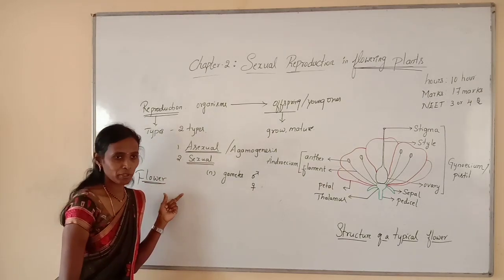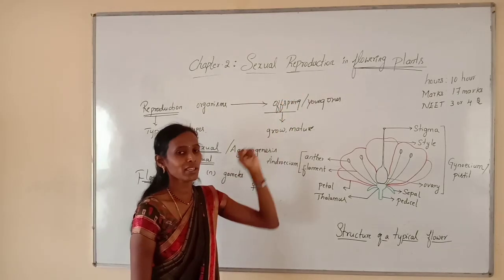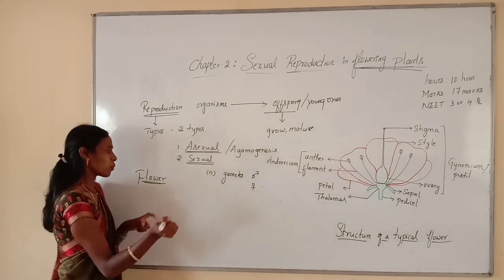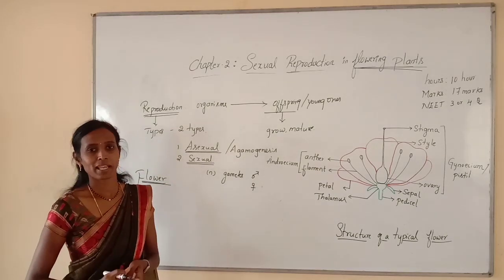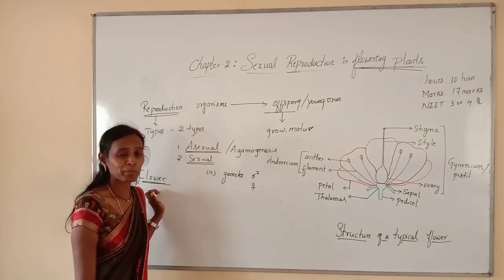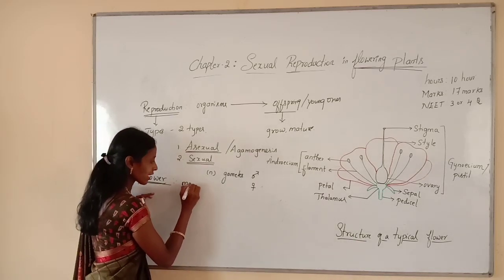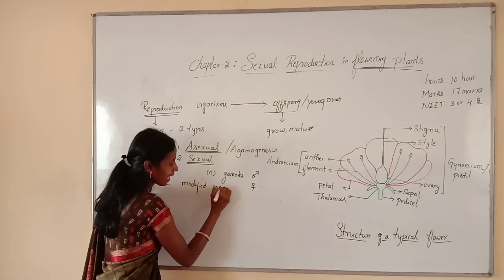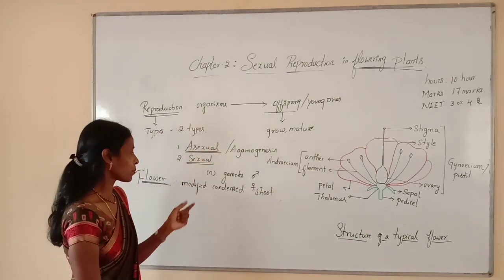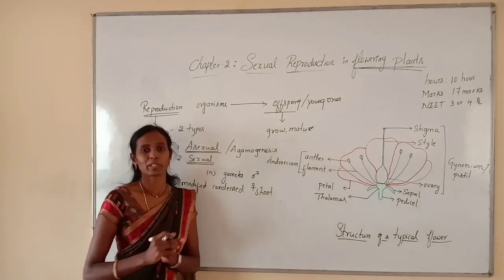This flower is very interesting. As I already told you, this chapter is very interesting because of flowers, and everyone will be familiar with the flower. As you studied in the chapter morphology of flowering plants, a flower is a modified condensed shoot, mainly meant for sexual reproduction. You clearly studied how the shoot gets modified into a flower in the chapter morphology of flowering plants.